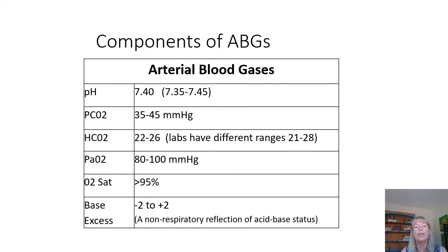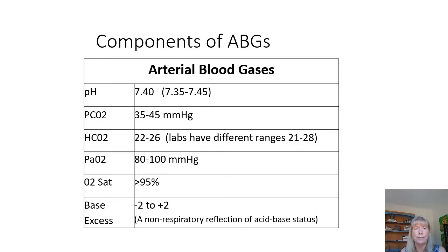Before we dive in, let me give you the values to remember. When looking at your ABG: pH 7.40, PCO2 35 to 45, bicarb 22 to 26 — though know your lab's range as it may differ slightly. PaO2 of 80 to 100, oxygen saturation greater than 95, so really 96 or over is considered normal. Base excess is another value — it's a non-respiratory reflection of acid-base imbalance and should run between minus 2 and plus 2.